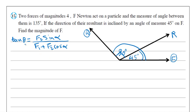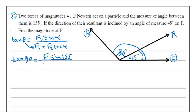So we consider theta equals 90 and we consider F1 equals 4, as the measure of the angle between 4 and R is 90 degrees. We write tan θ equals F2, which in this case will be F sine 135, over F1, which in this case is 4, plus F cosine 135.